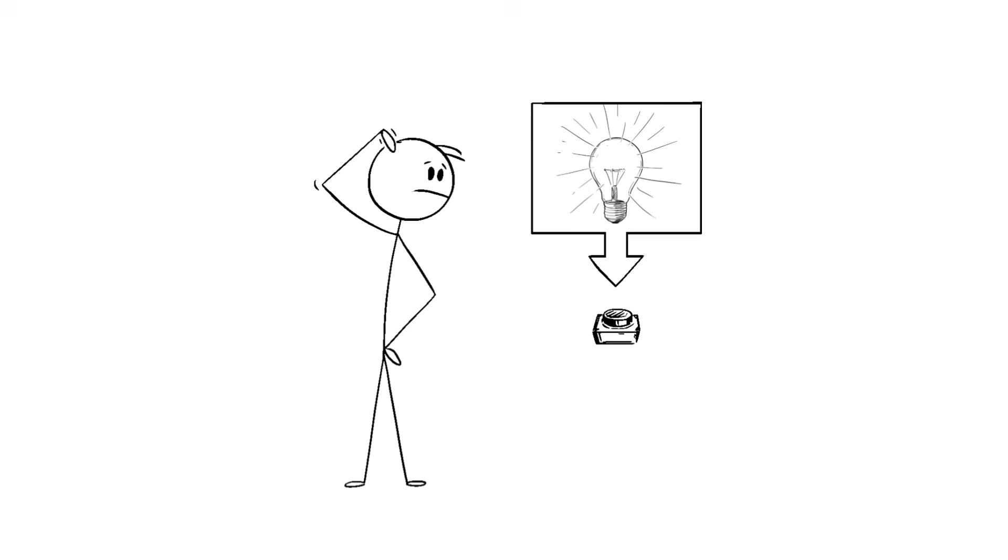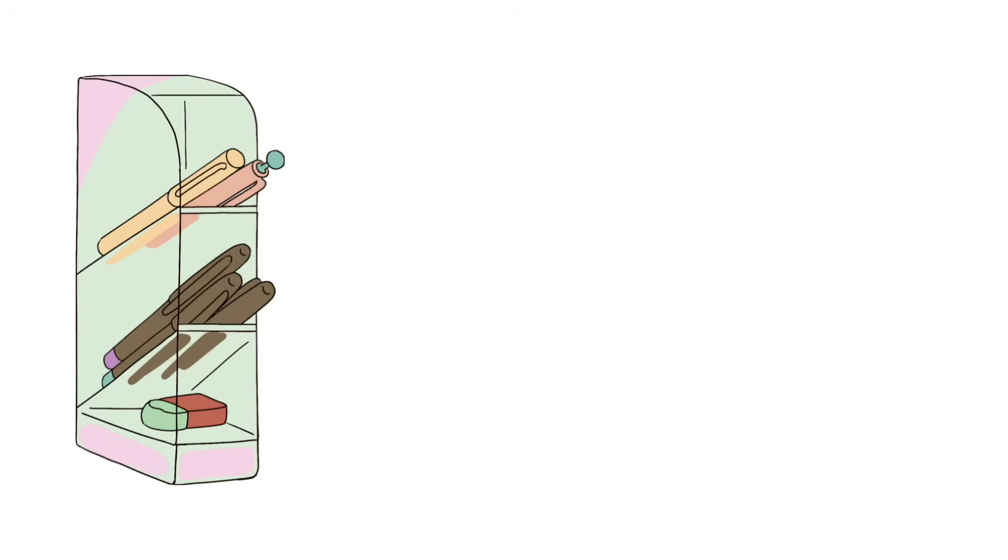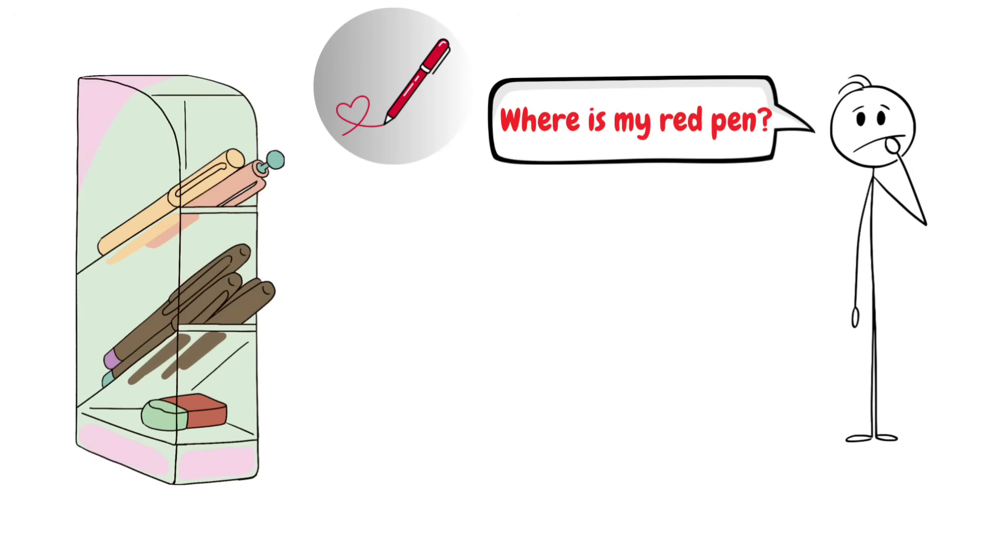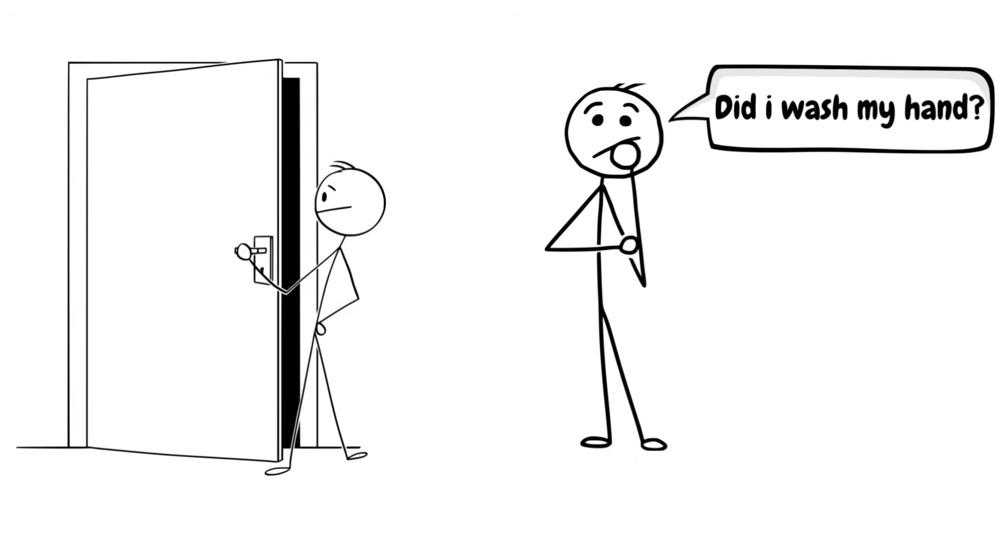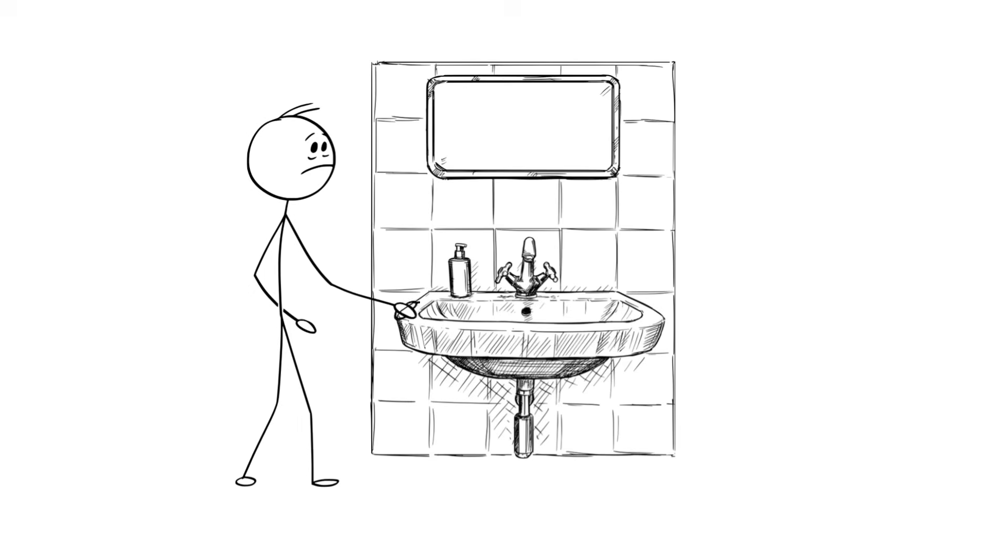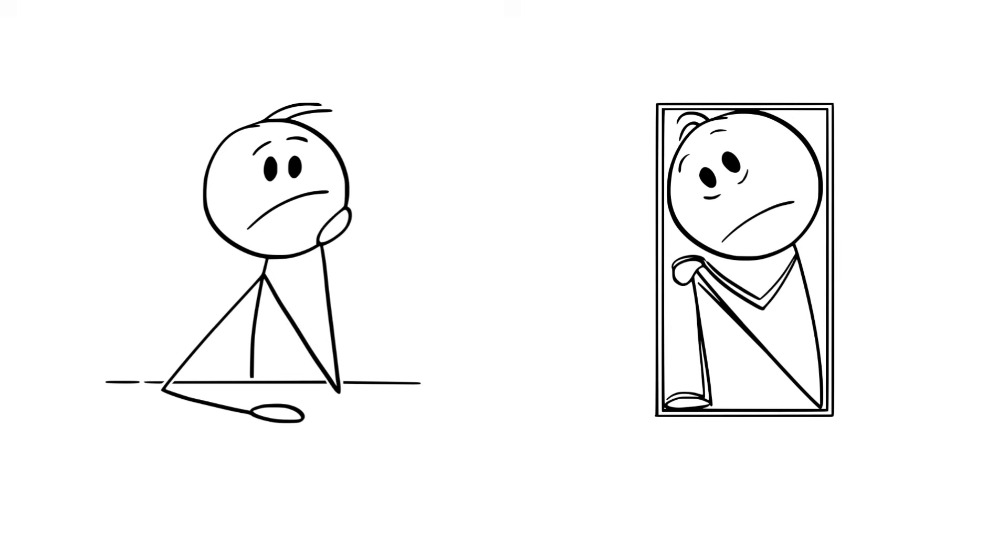You might feel like you have to tap a light switch five times before leaving the room, or else your brain whispers, something bad will happen. Or maybe you organize your pens by color and height, and if one's out of place, it bugs you like a rock in your shoe. Then there's the classic hand washing. You touch a doorknob, and suddenly it feels like you've touched the surface of the moon. So you wash your hands again and again until your hands are cleaner than a surgeon's on their third scrub. These repetitive actions are called compulsions, and they're usually done to calm the uncomfortable thoughts or fears, called obsessions.